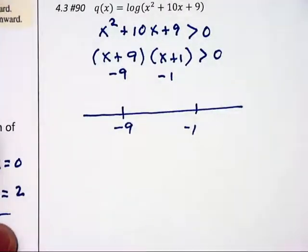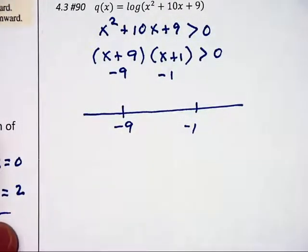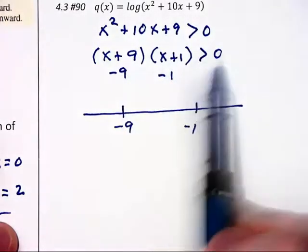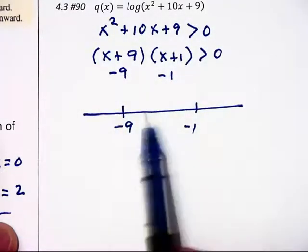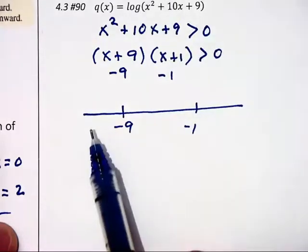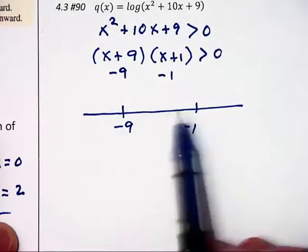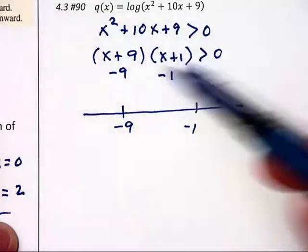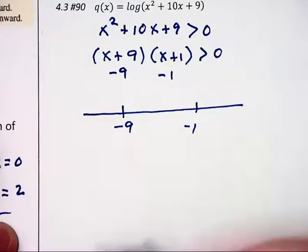So let's draw a number line, and let's highlight negative 9 and negative 1. And let's look at what our answer is going to look like. We're going to be substituting numbers into each of these intervals to the left of negative 9, in between these two numbers, and to the right of negative 1, to determine the positiveness or negativeness of each interval. And we want the product of these numbers to be positive.